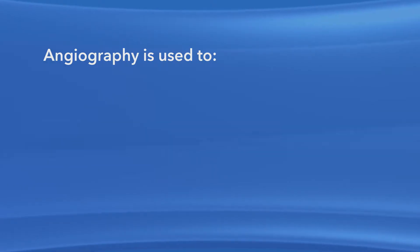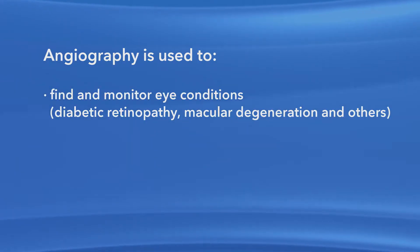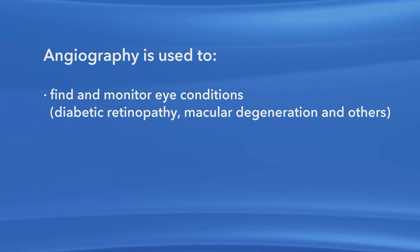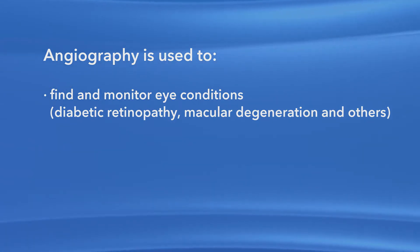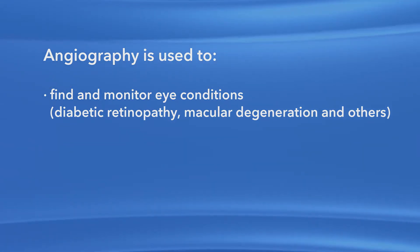The process of taking photos of the back of your eye is called angiography. Angiography helps your ophthalmologist see what is happening in the retina or in the blood vessels under the retina, called the choroid. Ophthalmologists use angiography to help diagnose and monitor certain eye conditions, such as diabetic retinopathy and macular degeneration, among others.